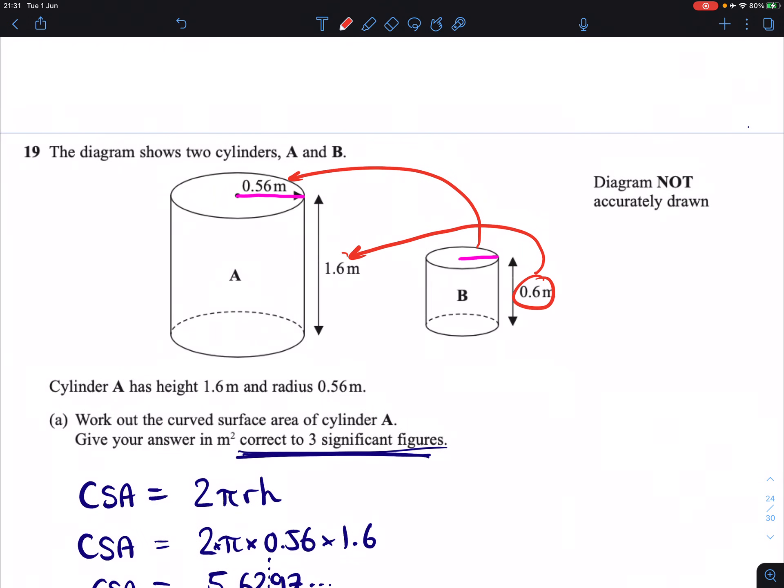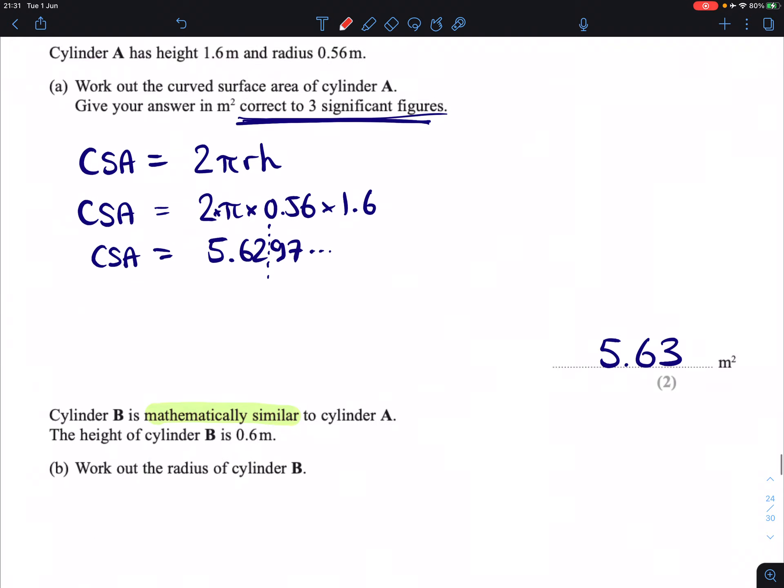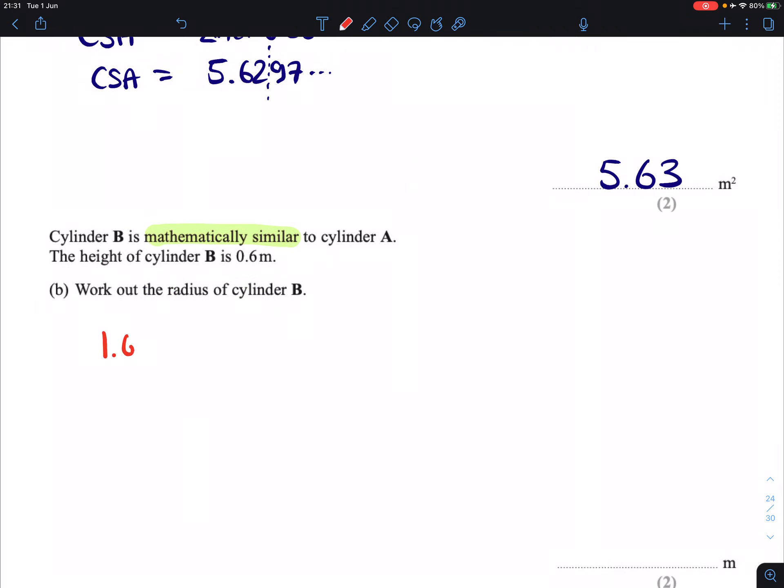So, if we notice, we have our heights for both of them, so we can figure out how much times bigger the lengths are in A compared to B by dividing 1.6 and 0.6 with each other. So, 1.6 divided by 0.6 gives us 8 over 3. Now, I could write that as 2.6 recurring, which means all of the lengths in the big shape are 2.6 recurring times as big, but I'm going to leave it as 8 thirds because fractions are your friend like that.